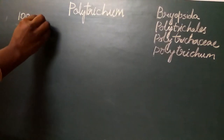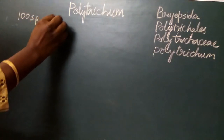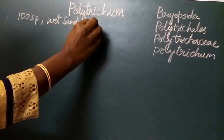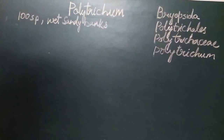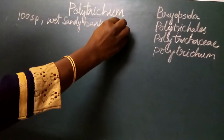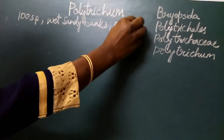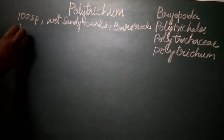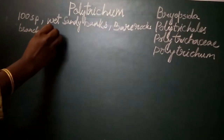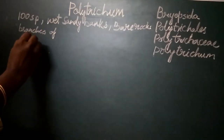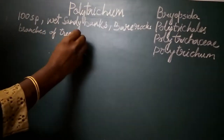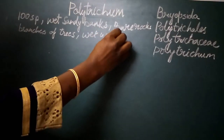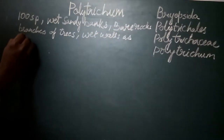It is commonly seen growing on wet sandy banks of rivers, ponds, pools, on bare rocks, on the branches of trees which grow in shade, and on wet walls as a green carpet.